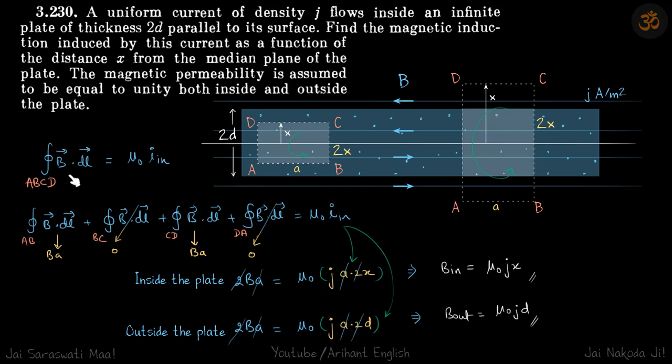So by Ampere's law we know B dot DL is mu naught times I enclosed. So for ABCD we can write like this. Now for AD part, in both cases, field is perpendicular to DL vector because DL is along AD, which means B dot DL will be 0. So for BC and DA, B dot DL is 0.